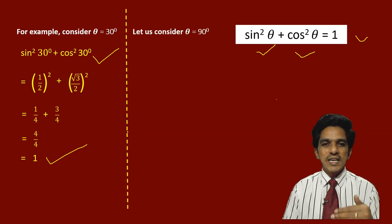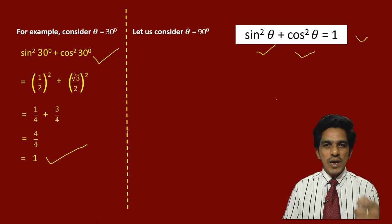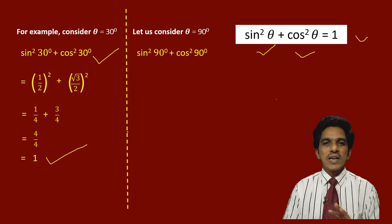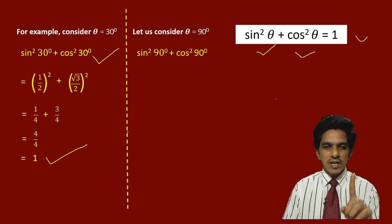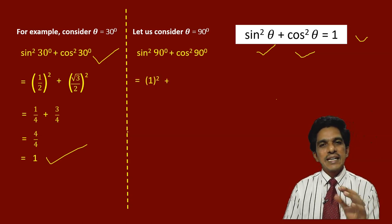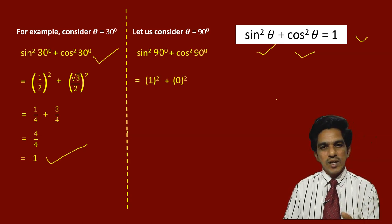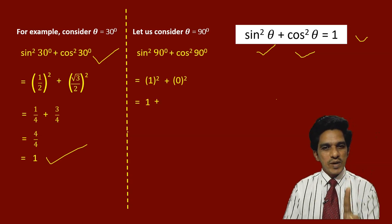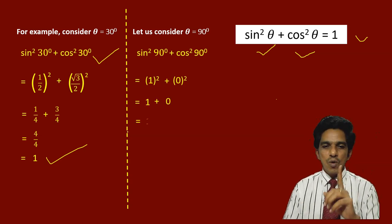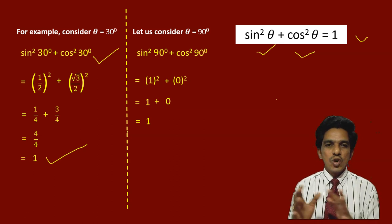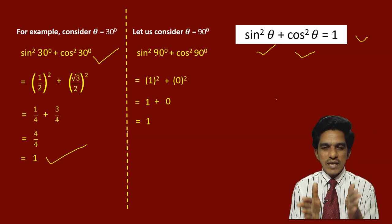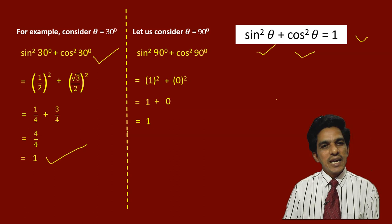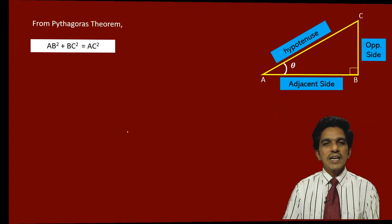Let us also verify for theta = 90 degrees. Sin²90° + cos²90° = 1² + 0² = 1 + 0 = 1. So including 0 and 90 degrees, this identity is valid for all acute angles in that range.